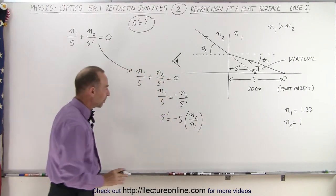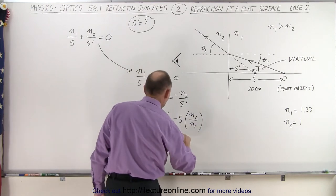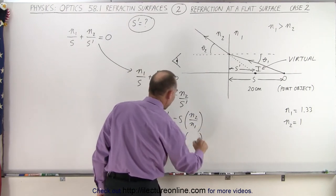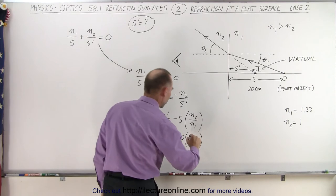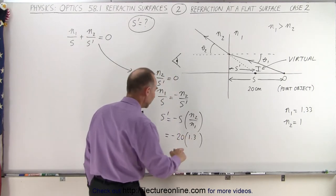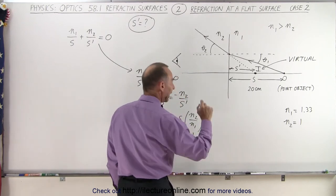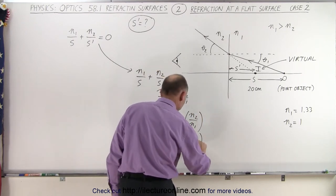Now let's plug in some numbers and see what we get. So this is equal to minus S, which is 20 centimeters, so minus 20, times N2, which is 1.33. Oh, no, N2 is equal to 1. I had that wrong there. 1 divided by N1 is 1.33.